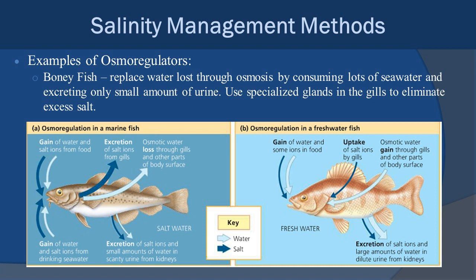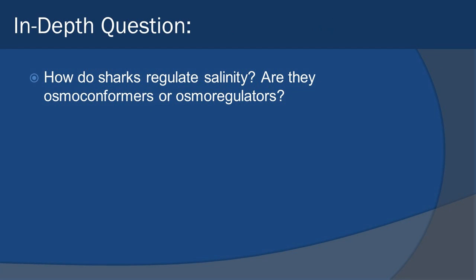Freshwater fish aren't designed for saltwater — put a bass or bluegill in salt water and they don't have those adaptations, so they'll die quickly. Freshwater fish excrete a lot more water in their urine, which is a problem if you're trying to retain water lost through osmosis in saltwater. Now here's the question: how do sharks regulate salinity — are they osmoconformers or osmoregulators? They're an interesting case, so figure it out on your own and write it down in your notes. Until next time, keep thinking.